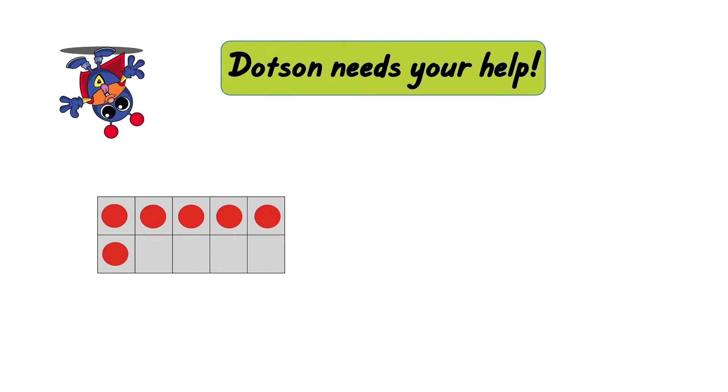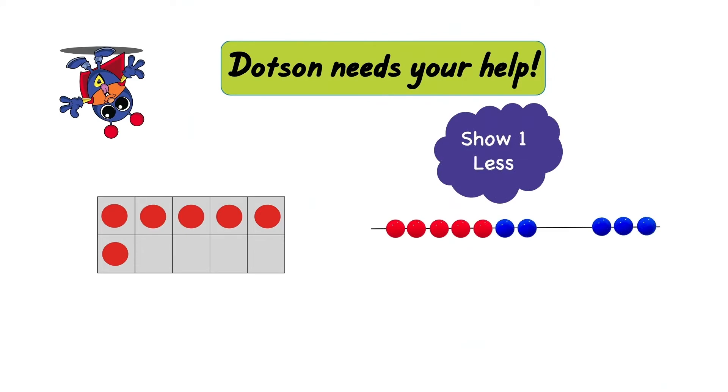Look at what Dodson did. Dodson needs your help. He was given the number six to build in a 10-frame. Then he was asked to show it on a counting buddy, but he was asked to show the number that is one less. Take a look at how Dodson figured that out. What do you see? What do you notice? Did he do it right? Or do you see a mystery math mistake?